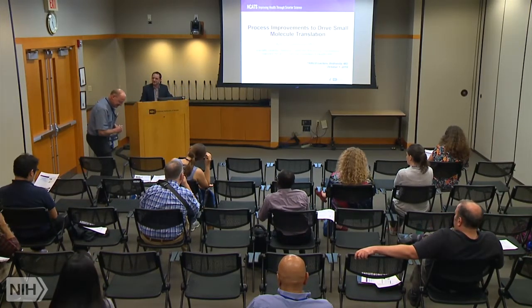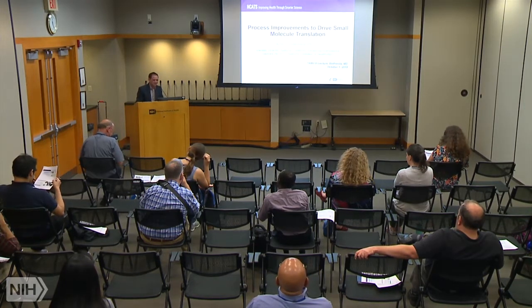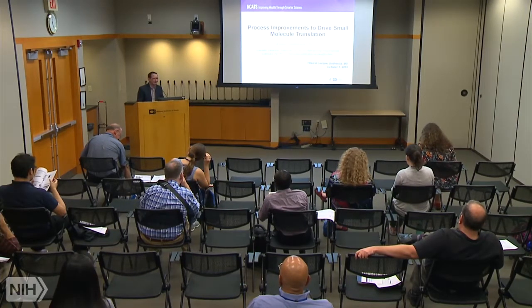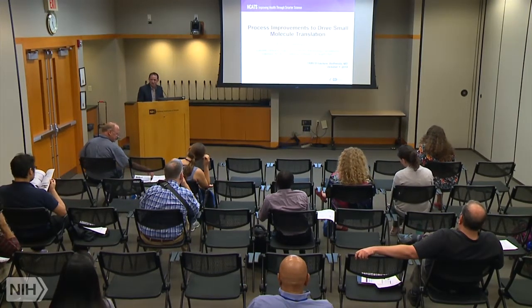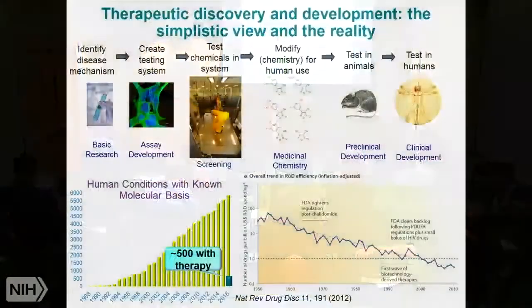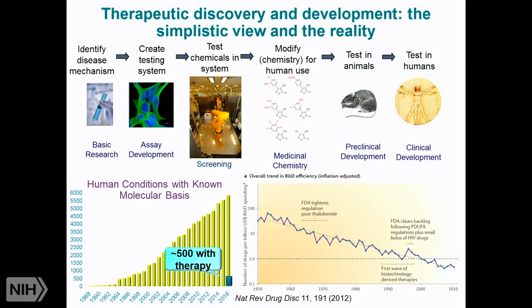This is my fifth year telling people about translation and small molecule advancements, and every year there's a bit of a different story. What we're engaged with is traversing the path between a basic discovery as announced in journals like Science and Nature and coming up with an actual treatment that benefits patients. In between there are multiple steps — this is a fairly naive view of the process highlighted for small molecules, with similar paths for medical devices, biologics, and therapeutic antibodies.